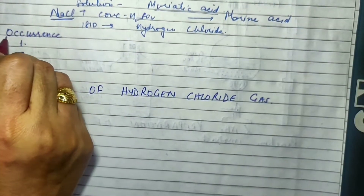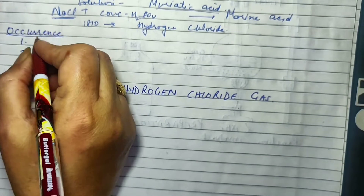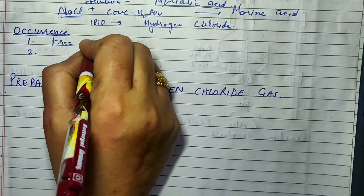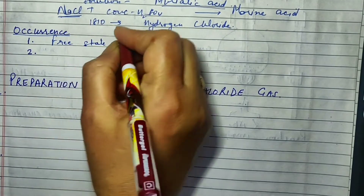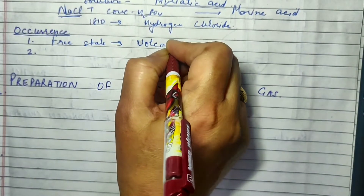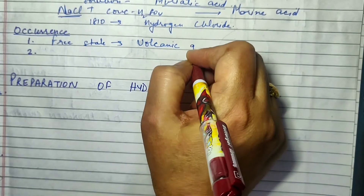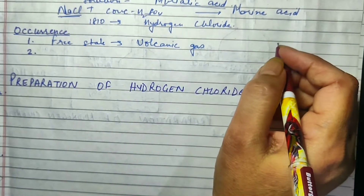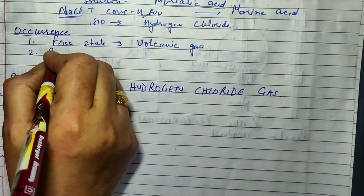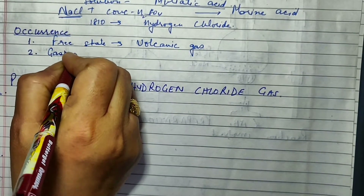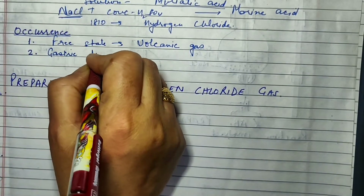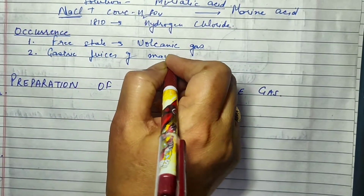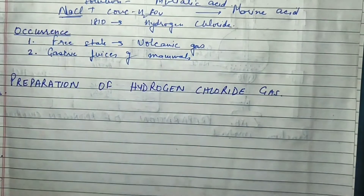Now, where does it occur in nature? Its occurrence: it occurs in the free state, though in traces, in volcanic gases — whenever volcanoes erupt, a number of gases come out, and HCl gas is one of them. It is also found in the gastric juices of mammals, as you may have studied in biology.